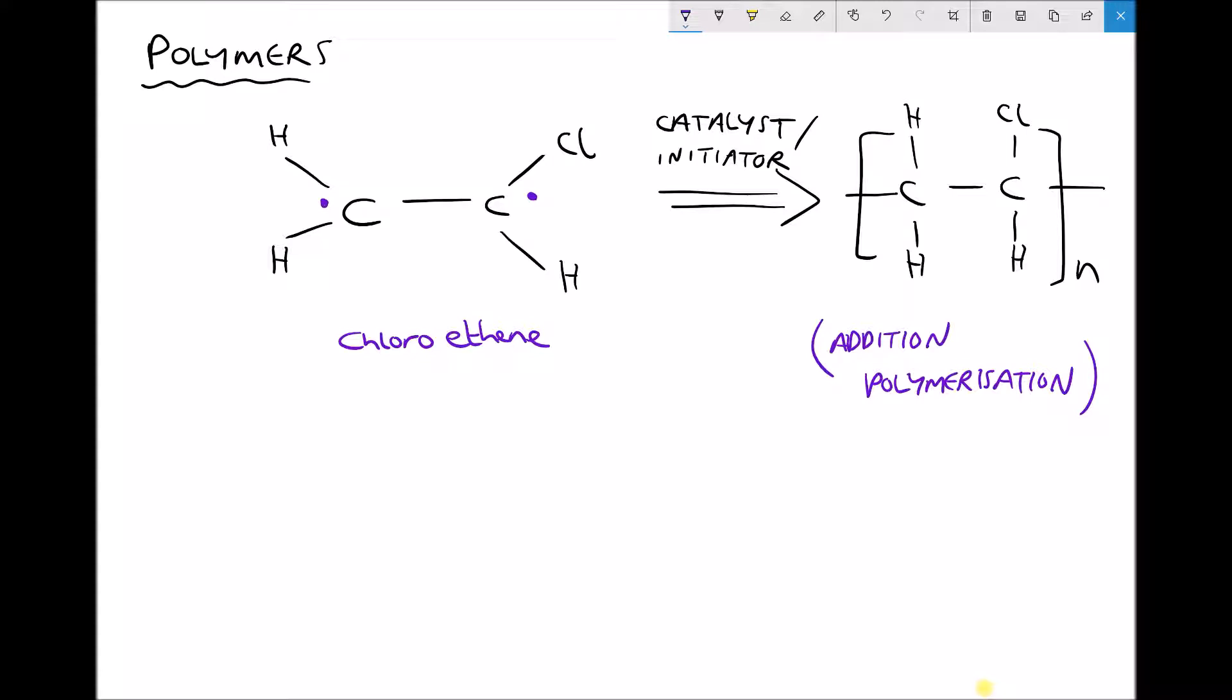Once we've done that, each of those carbons will be free to connect to another carbon to form the backbone of our polymer. The way that we break one of those bonds is using something called a catalyst or an initiator. It's a highly reactive particle which will attack that double bond and break it, freeing up those electrons in the carbons.